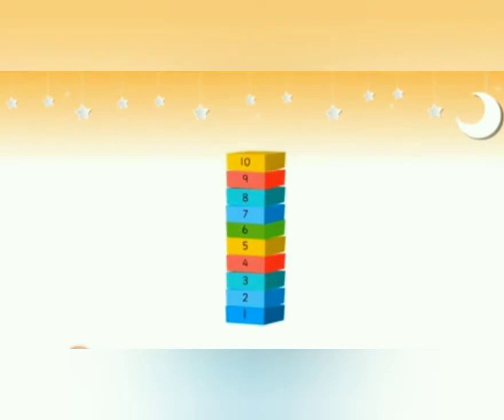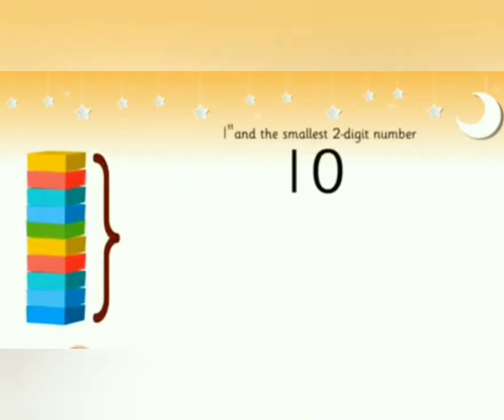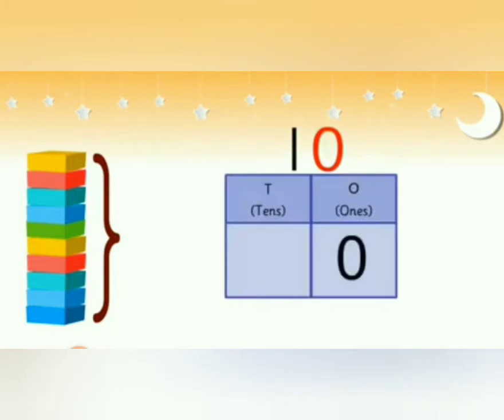Therefore it becomes one ten. It is the smallest two-digit number, means two digits are there: zero and one. The zero is kept in the ones house and one is kept in the tens house.